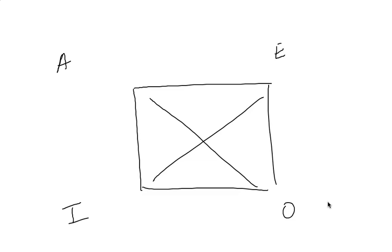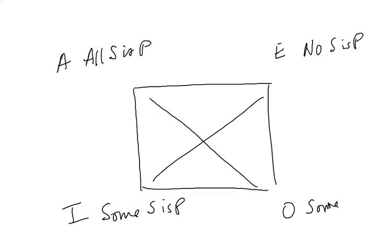Recall that the A statement says all S is P. E says no S is P. I, some S is P. And O, some S is not P. Okay, everybody have that as part of your review.